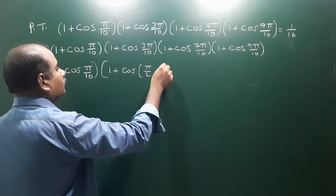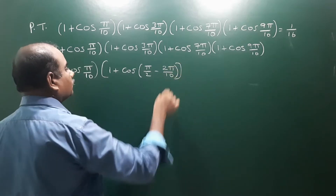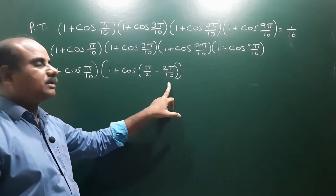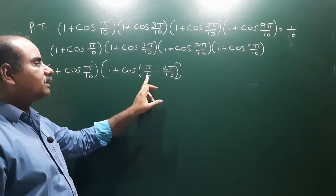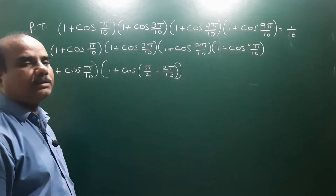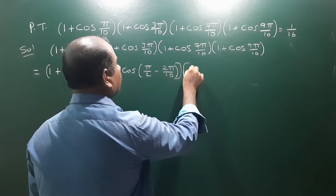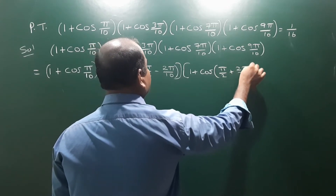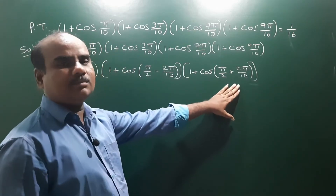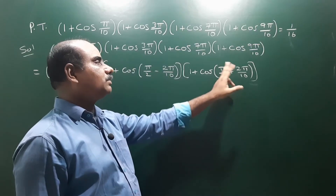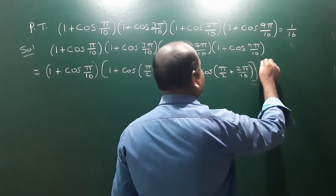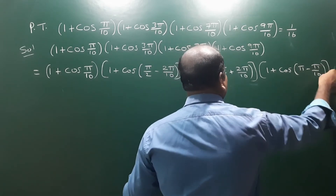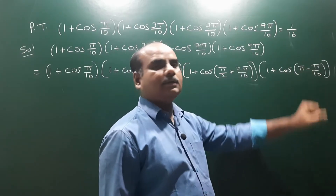The second term: using LCM of 10, we write 5π/2 minus 2π/10, so 5π minus 2π gives 3π/10. Similarly, the third term becomes 5π/10 plus 2π/10, which is 7π/10. The last term is 1 + cos 9π/10, expressed as π minus π/10, giving 10π minus π = 9π/10.